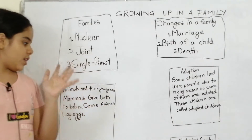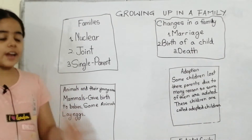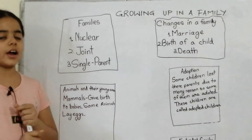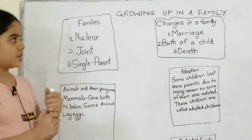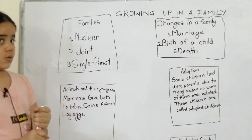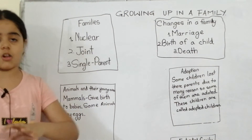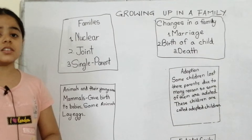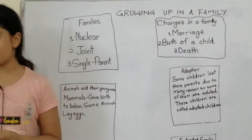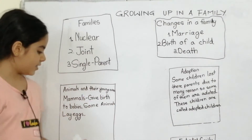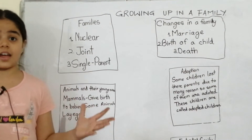Now we are going to do animals and their young ones. We will read the definition. Mammals — mammals give birth to small babies. Mammals are like us; we can say they are animals. Mammals give birth to young ones, and some other animals lay eggs.